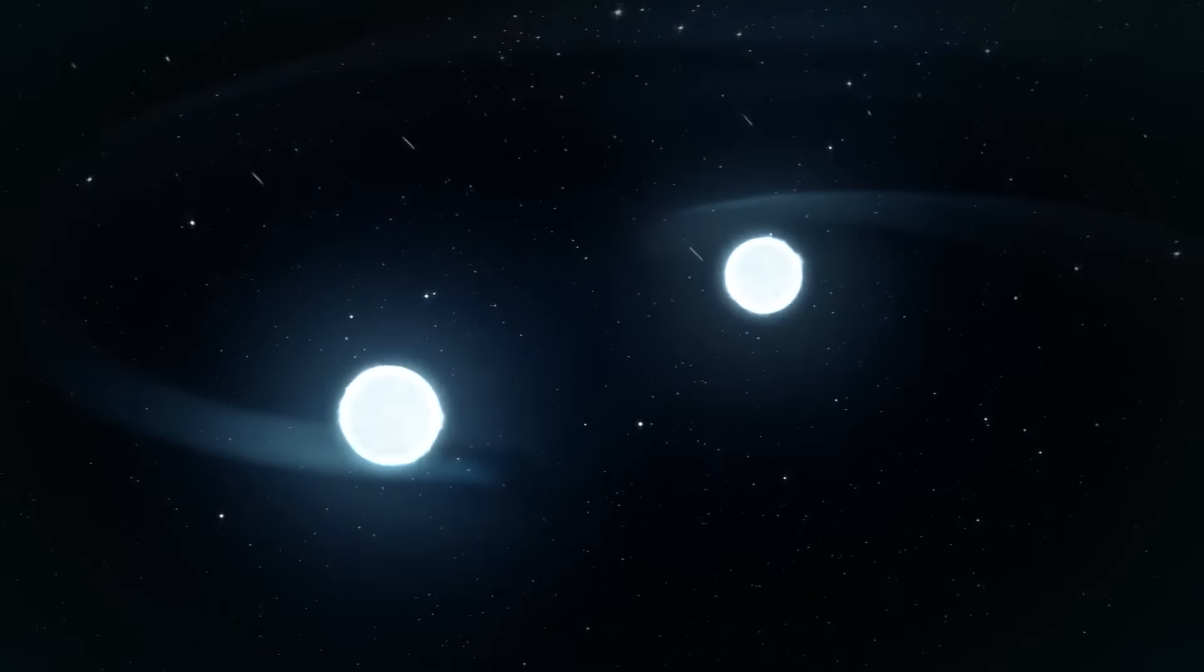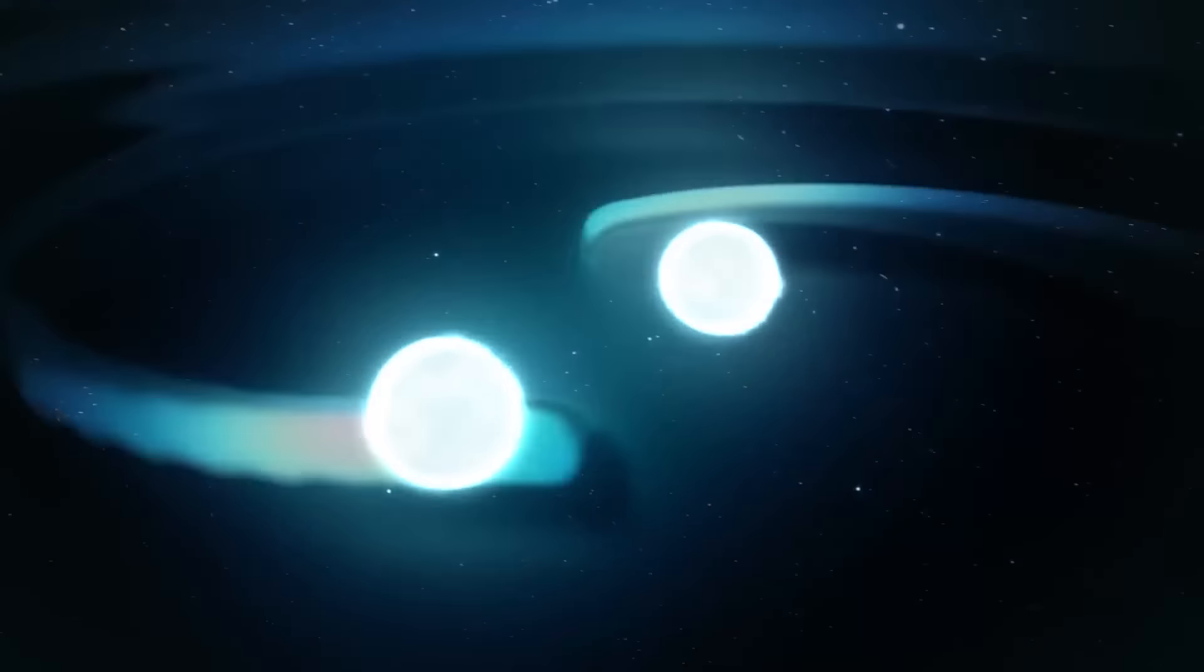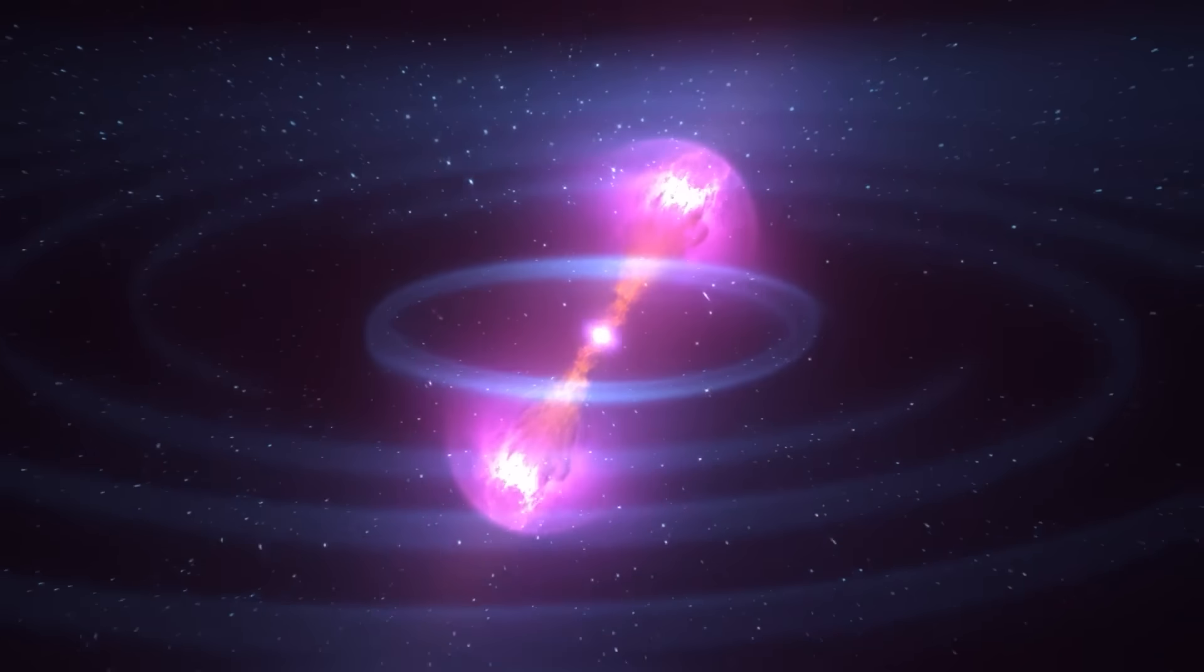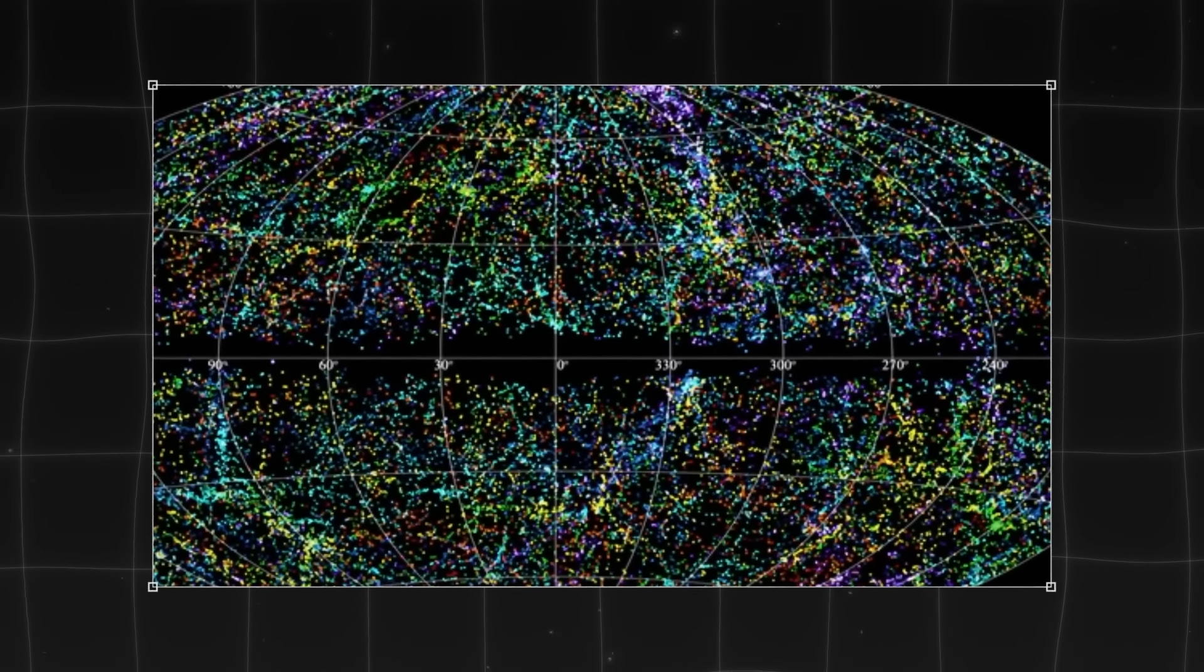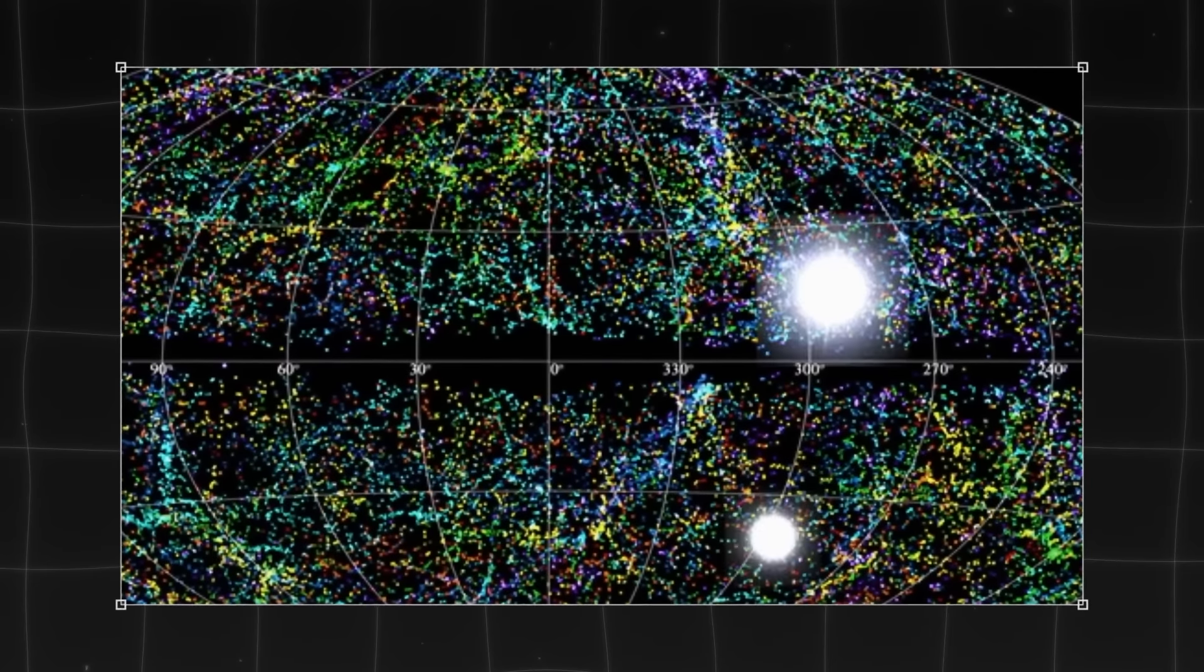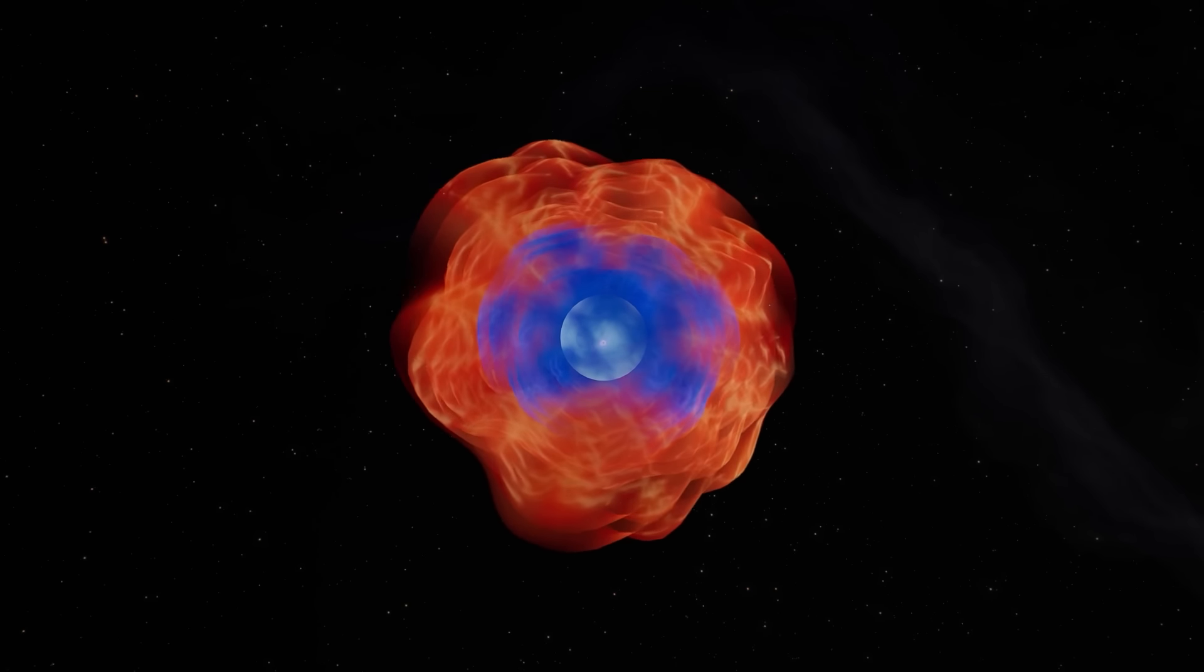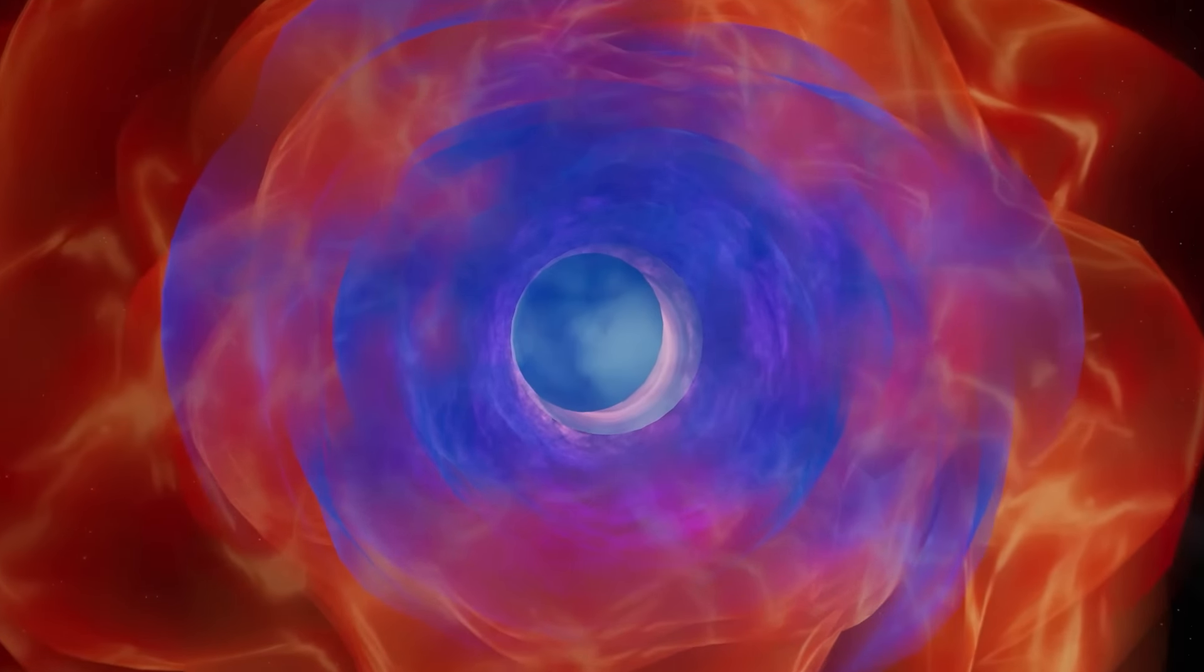Algunas teorías sugieren que los FRB solitarios podrían resultar de la muerte de estrellas o la colisión de dos estrellas de neutrones. Pero estos grandes acontecimientos cósmicos no pueden producirse regularmente en las mismas coordenadas. Quizás otras teorías expliquen estas transmisiones de radio extremadamente anormales.